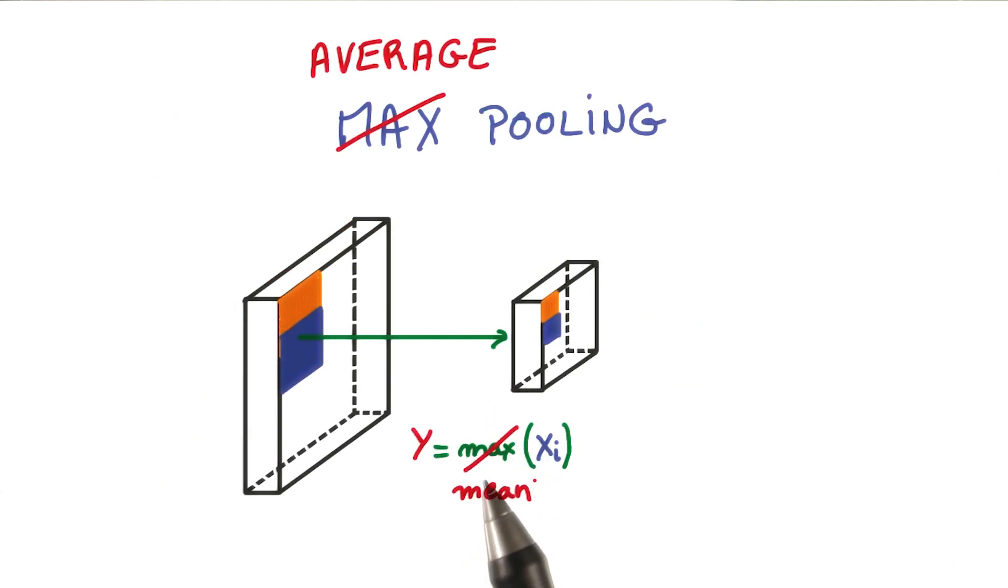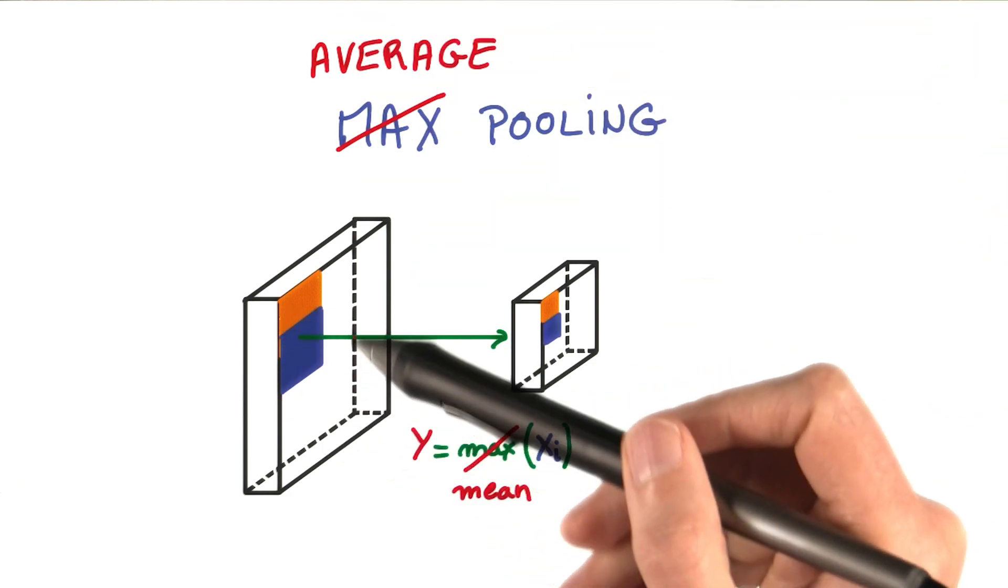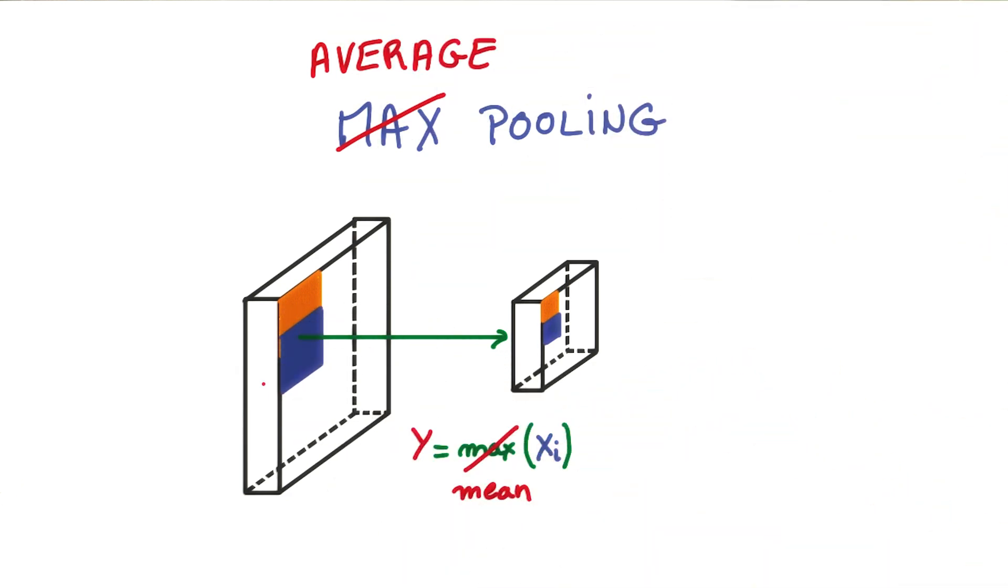Another notable form of pooling is average pooling. Instead of taking the max, just take an average over the window of pixels around a specific location. It's a little bit like providing a blurred low resolution view of the feature map below. We're going to take advantage of that shortly.